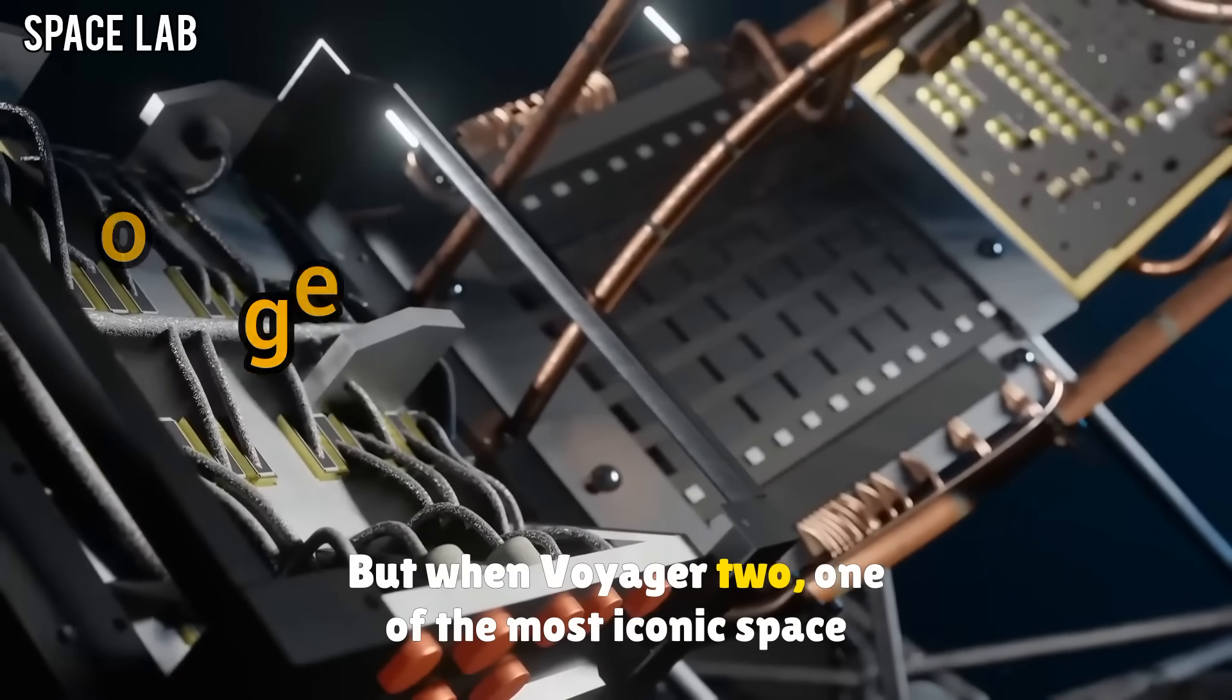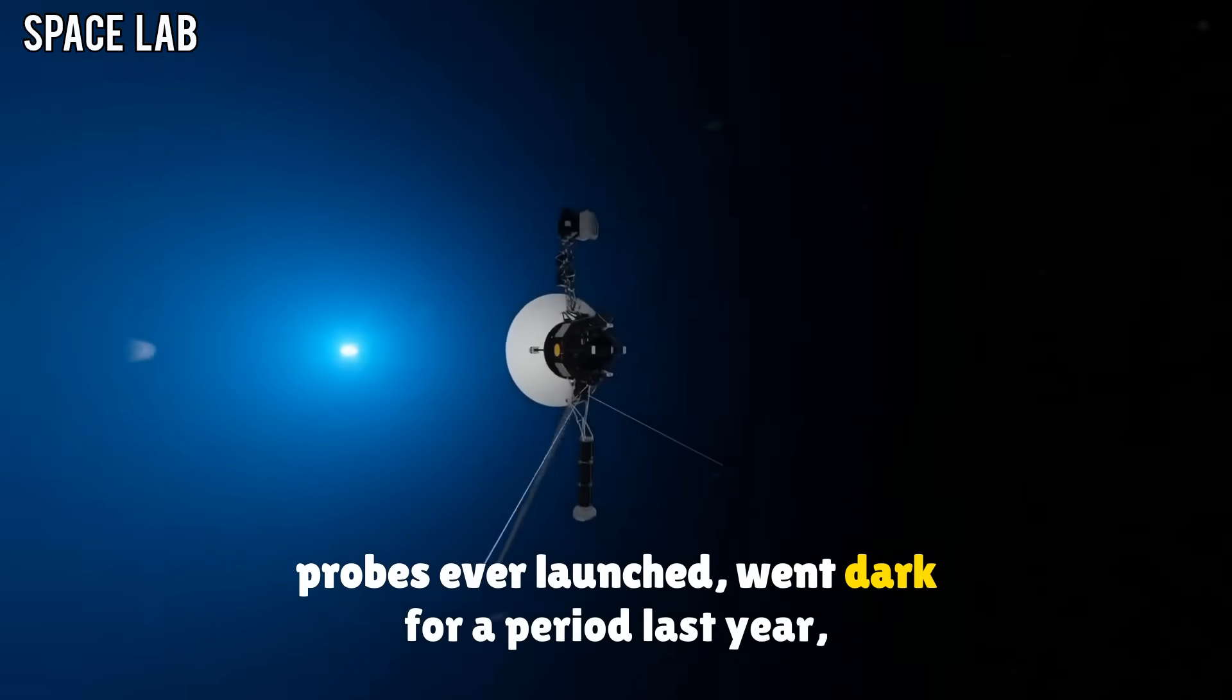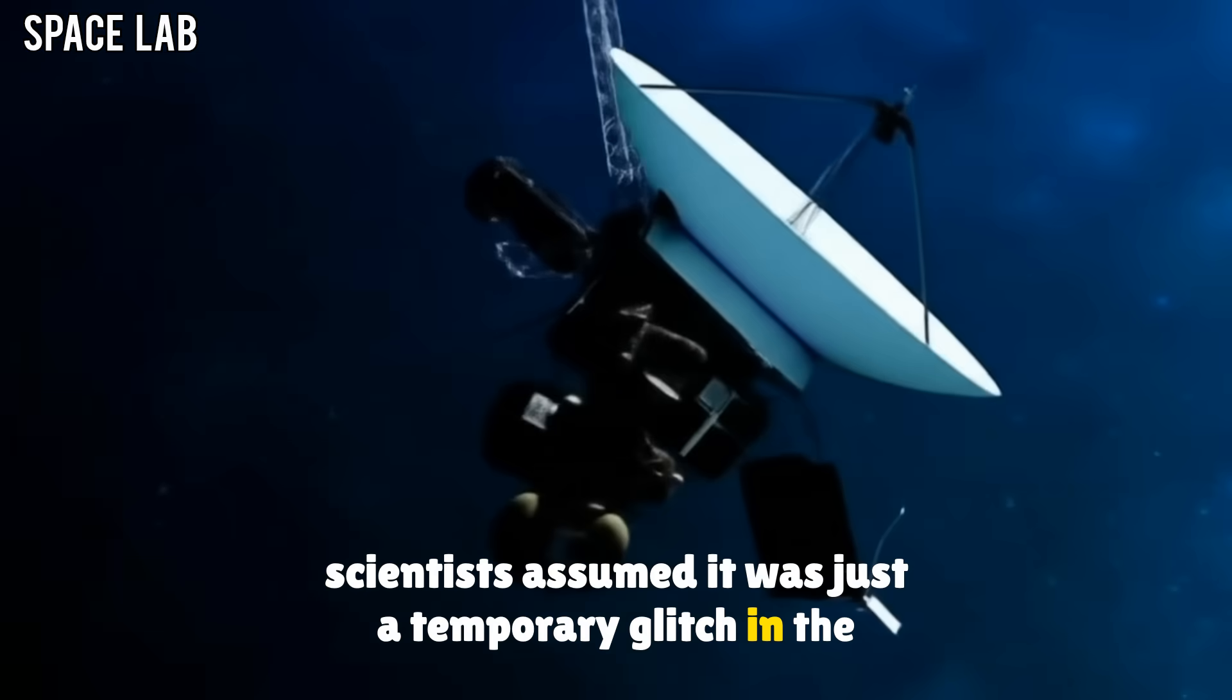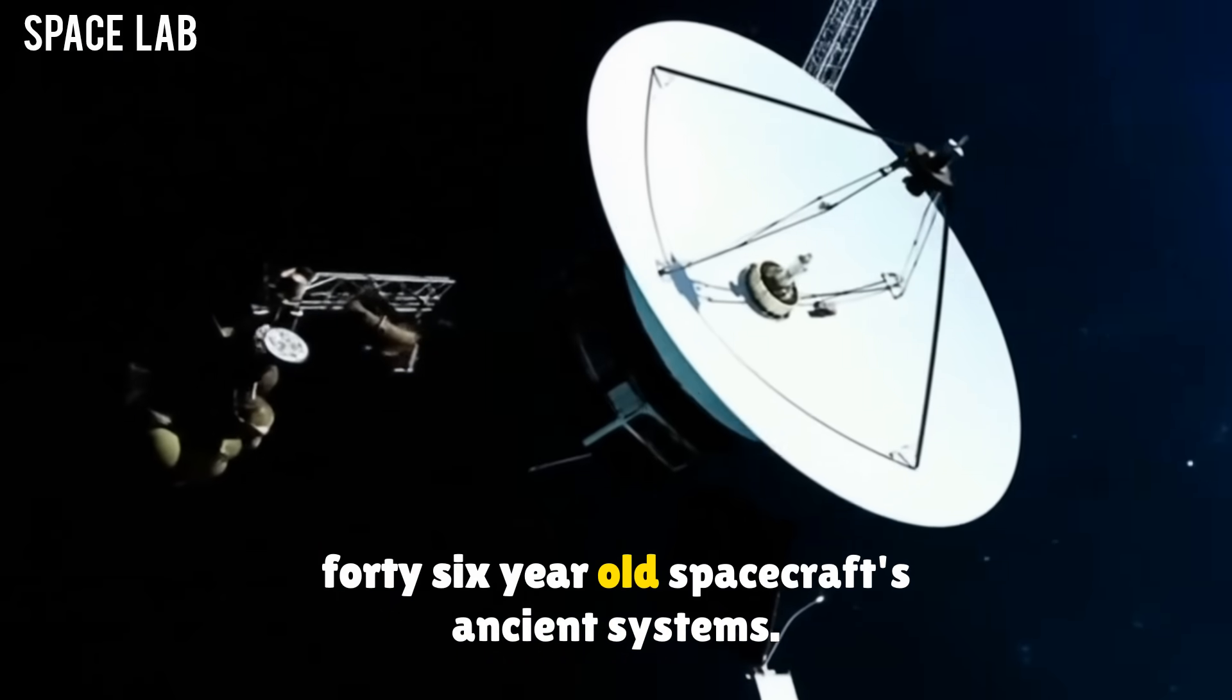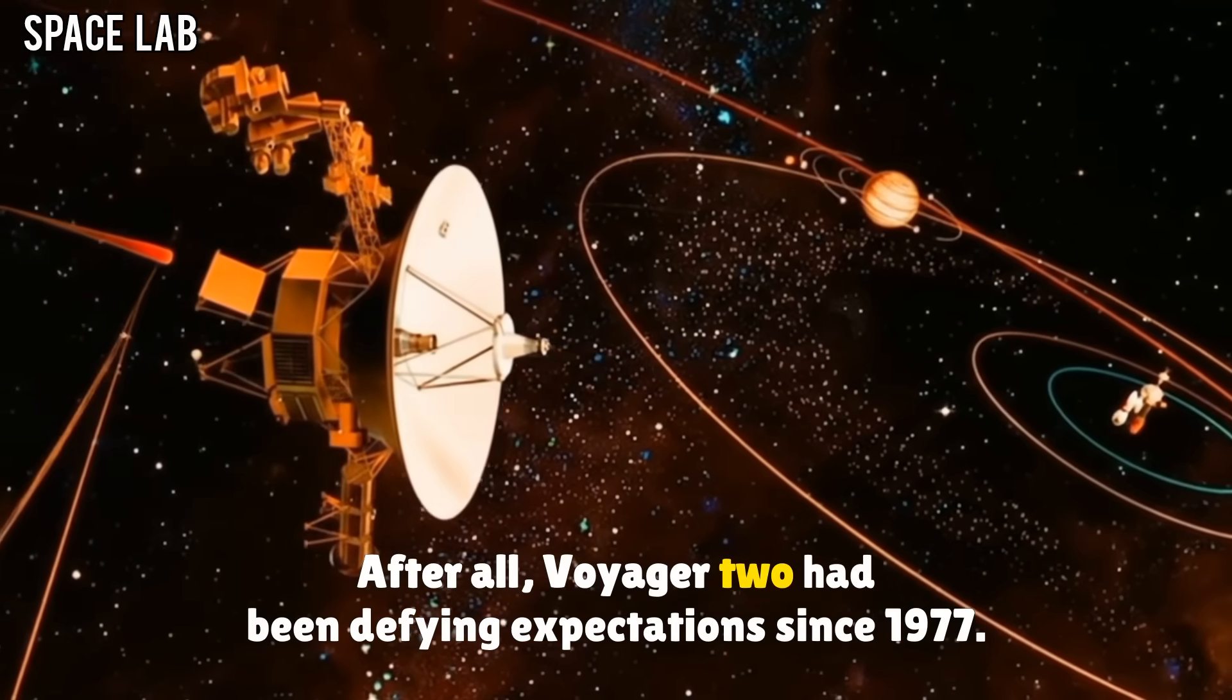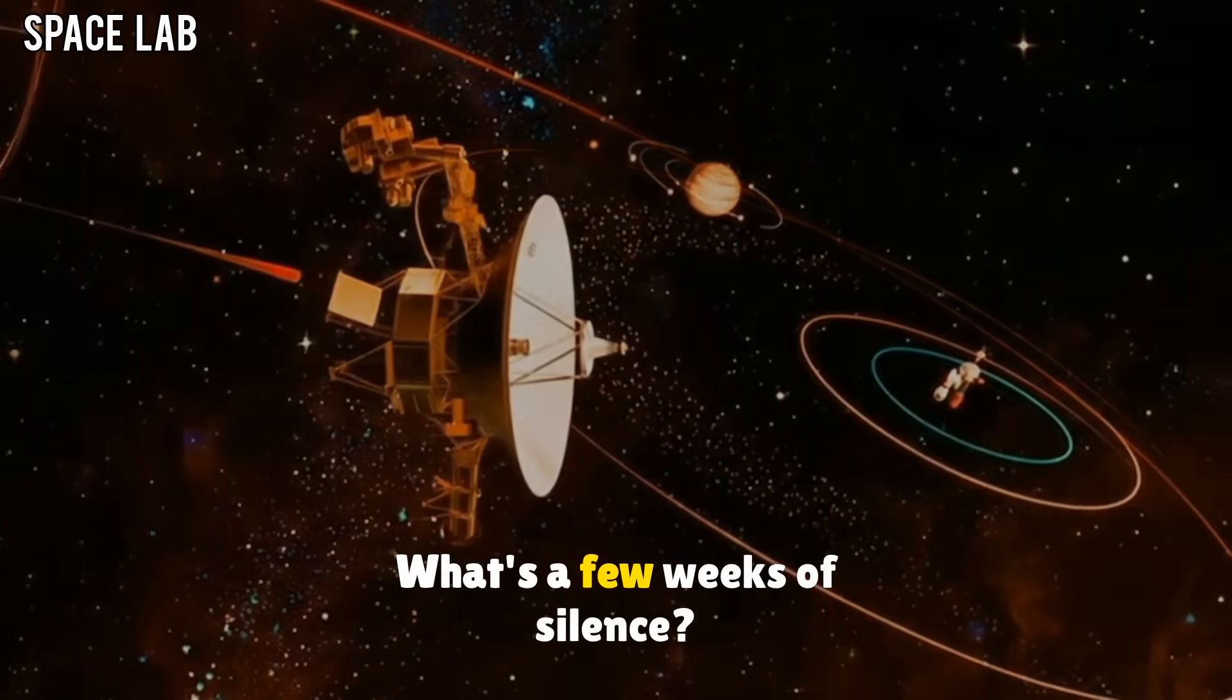But when Voyager 2, one of the most iconic space probes ever launched, went dark for a period last year, scientists assumed it was just a temporary glitch in the 46-year-old spacecraft's ancient systems. After all, Voyager 2 had been defying expectations since 1977. What's a few weeks of silence?